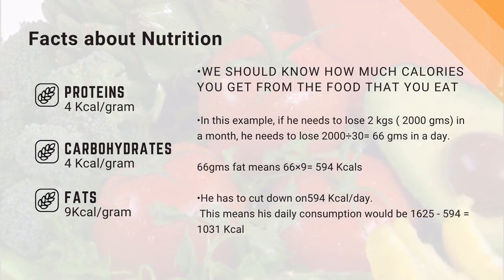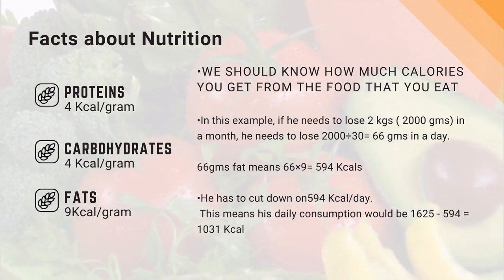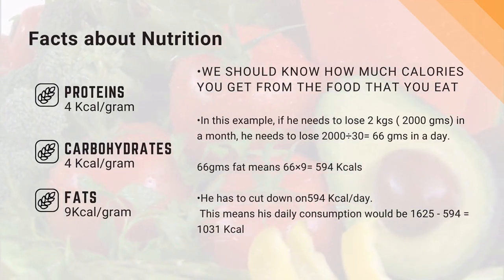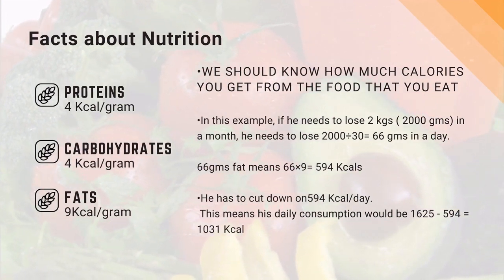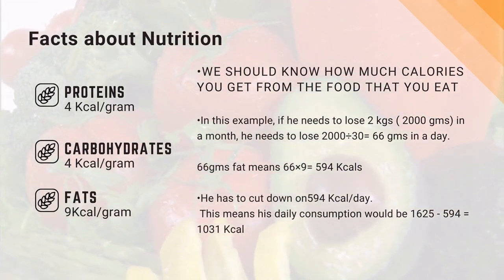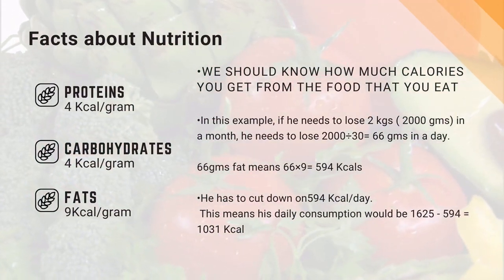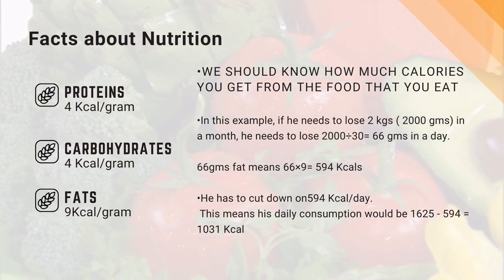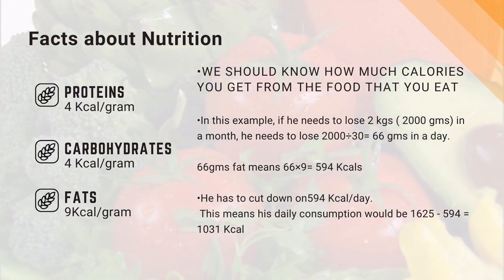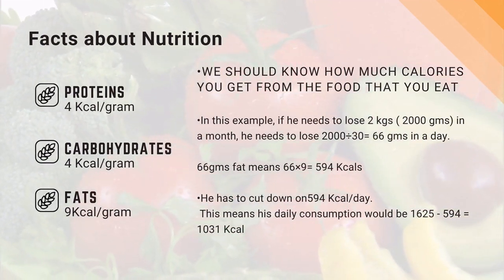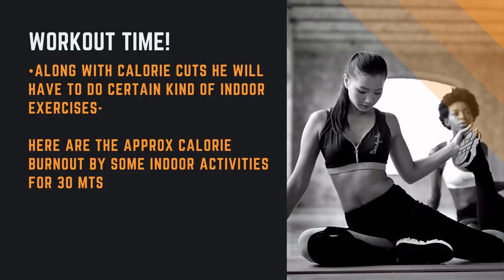In this example, if he needs to lose 2 kilograms — that is 2000 grams — in a month, he needs to lose 2000 divided by 30, which is 66 grams per day. 66 grams of fat multiplied by 9 equals 594 kilocalories. He has to cut down on 594 kilocalories per day, meaning his daily consumption would be 1625 minus 594, which equals 1321 kilocalories.